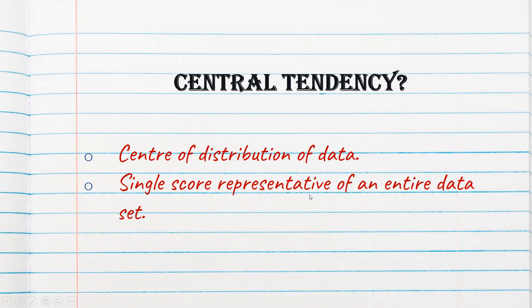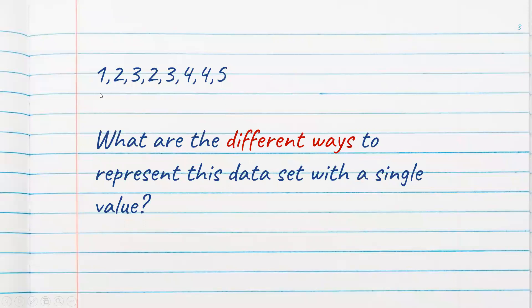What do I mean by a single score representative of an entire data set? If I give you an example, you can understand it better. Say I have this data — there are eight numbers here. Instead of writing this with eight numbers, I want to write this with a single number which is the representation of all these eight numbers. So what are the different ways to represent it as a single value?